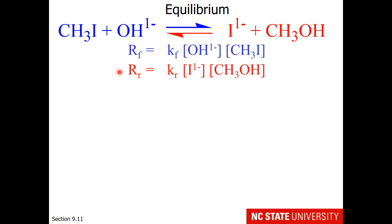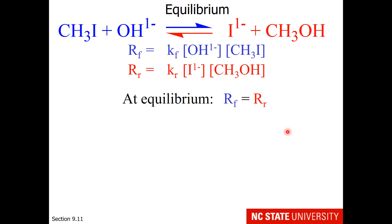Let's write out our rate expressions. The rate for the forward reaction equals the forward rate constant multiplied by the hydroxide concentration times the methyl iodide concentration, as these are reactants. The reverse rate equals the reverse rate constant multiplied by the iodide concentration and the methanol concentration, as these are our products. At equilibrium, the forward rate is equal to the reverse rate.